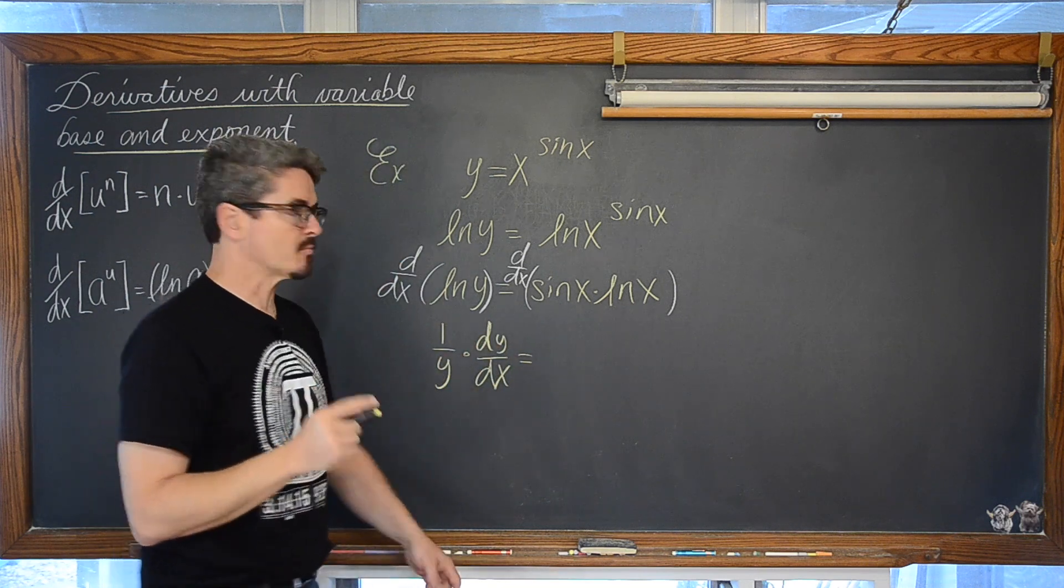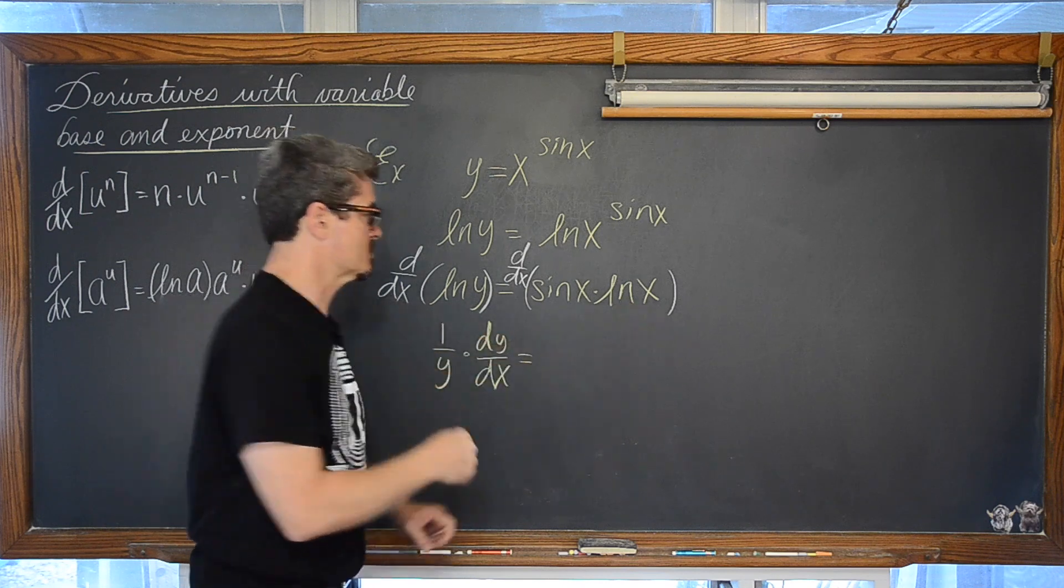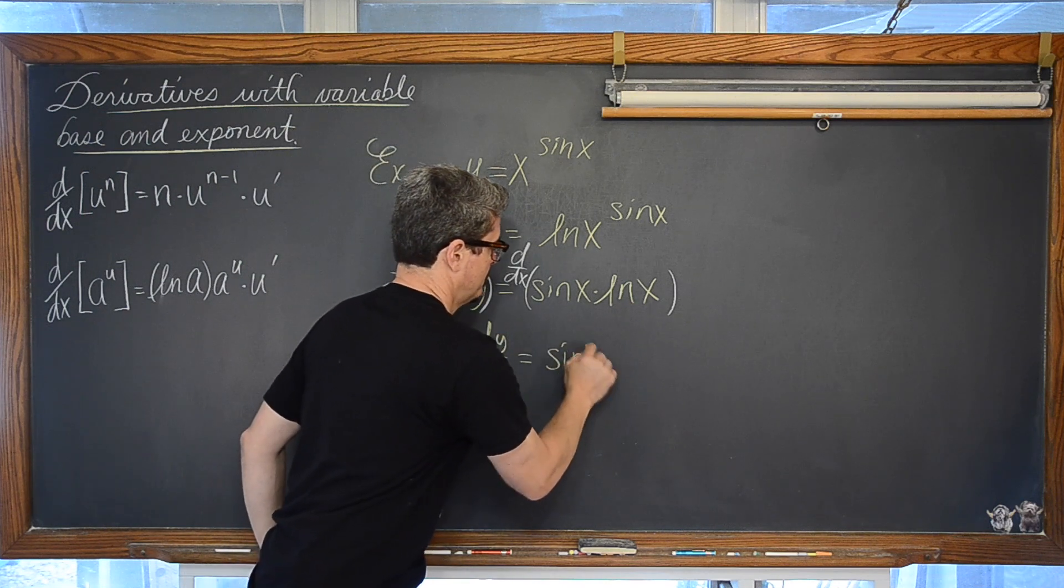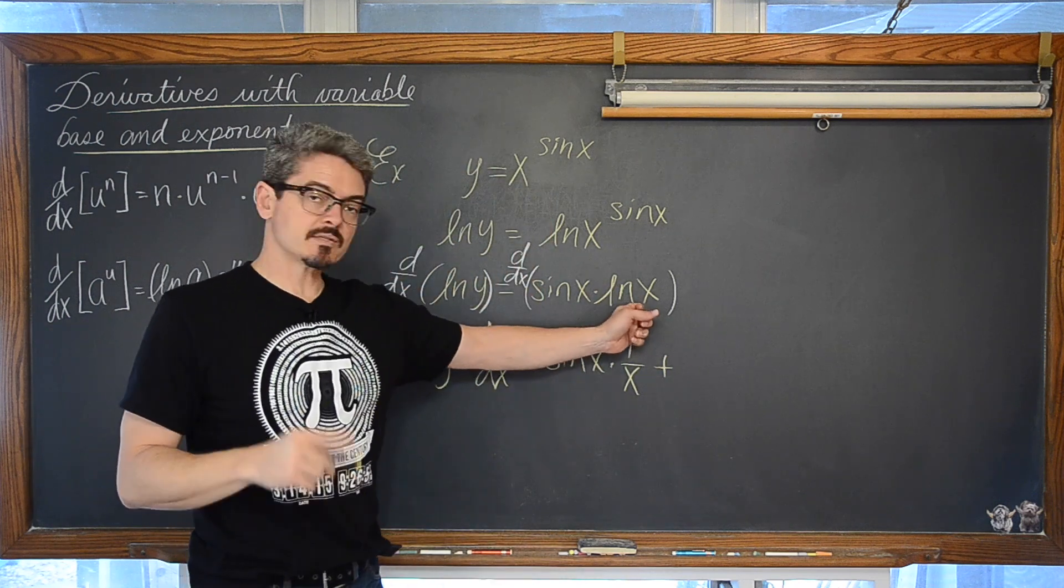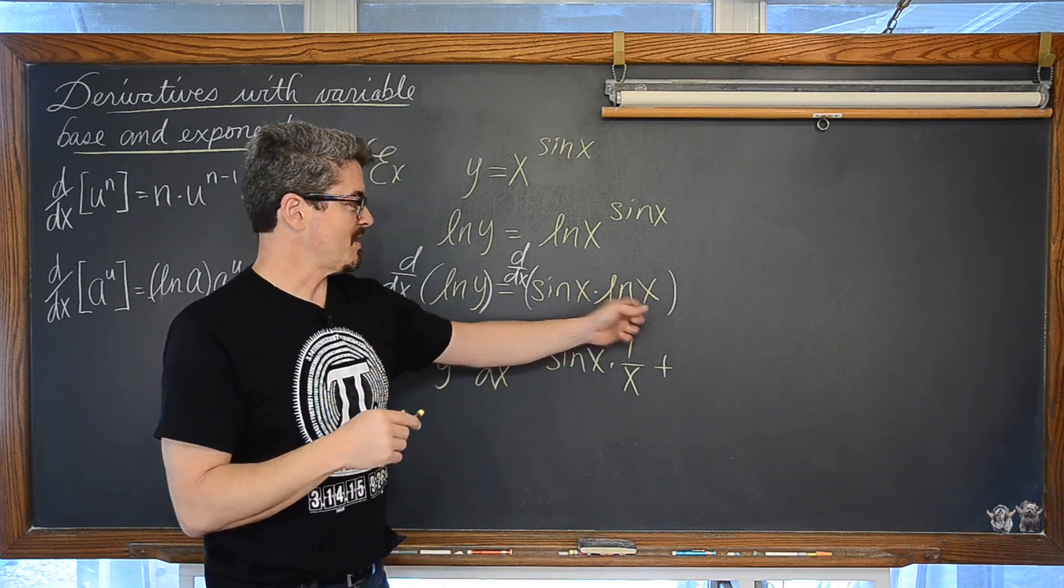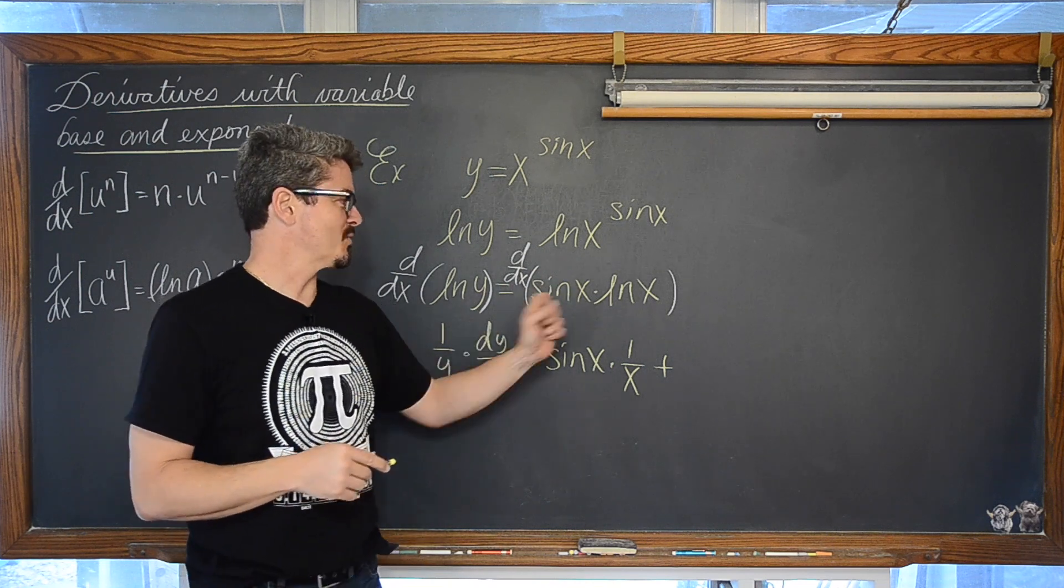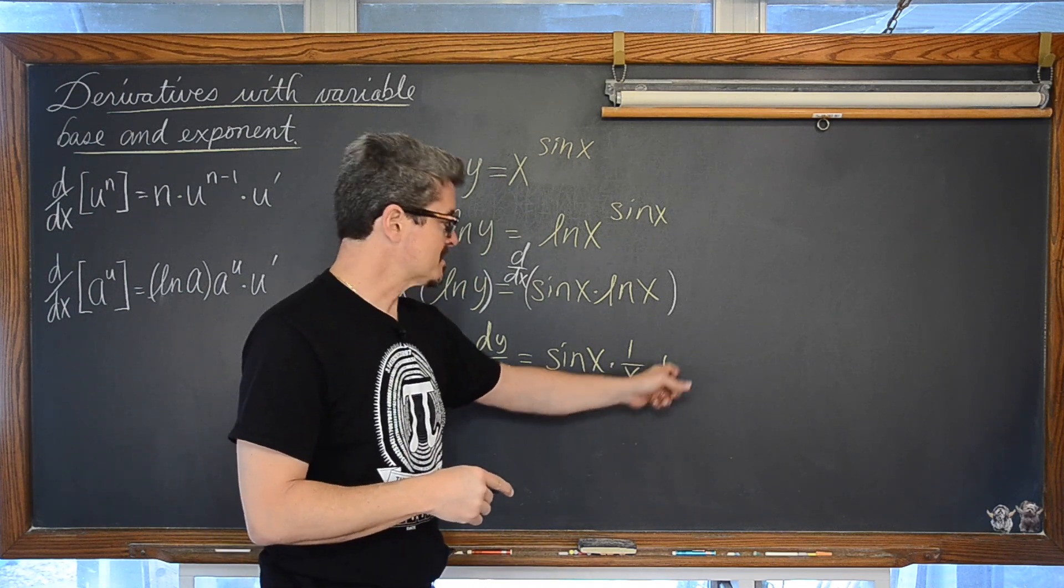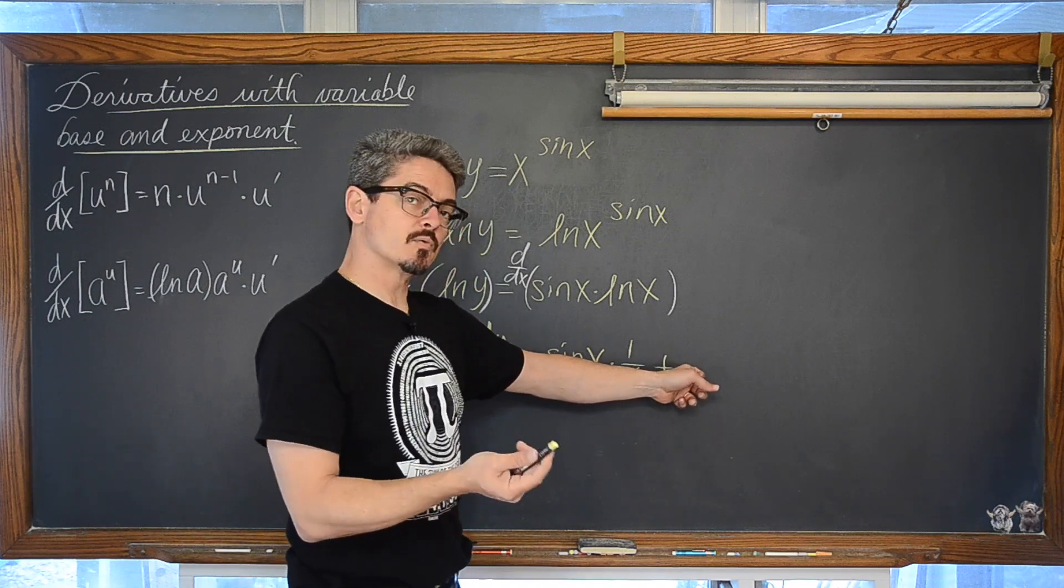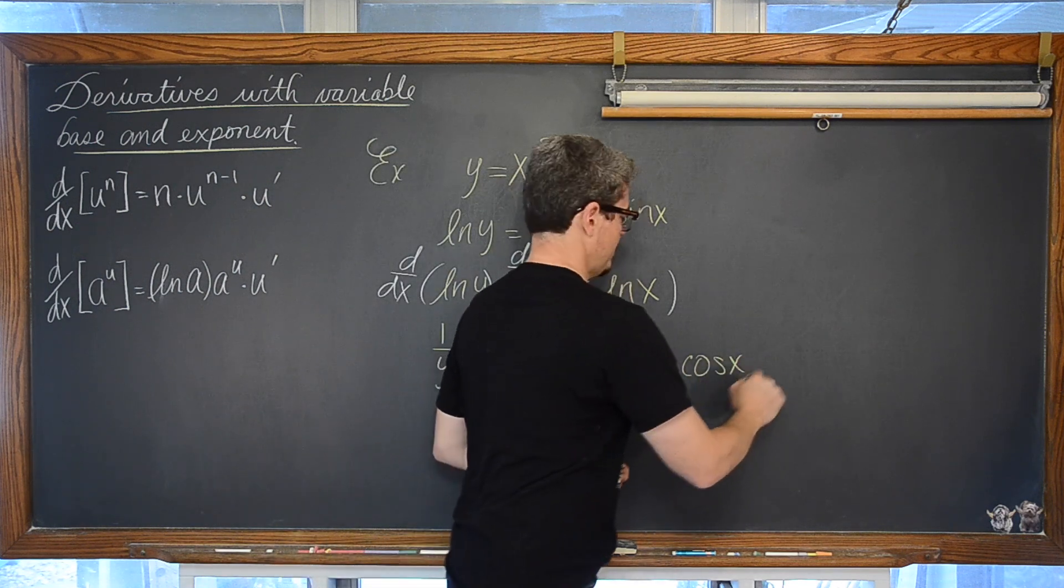So we have over here on the left 1 over y times dy dx. And on the right hand side using the product rule we have the sine times the derivative of the natural log of x which is 1 over x. And then plus the second factor, the natural log of x times the derivative of sine which is cosine. So we have first times the derivative of the second plus the second times the derivative of the first. And the derivative of sine is cosine of x.